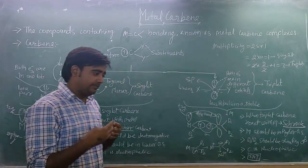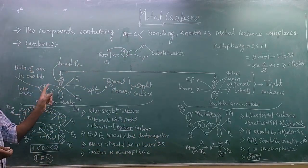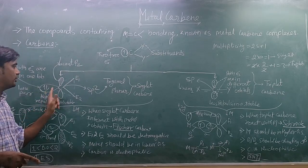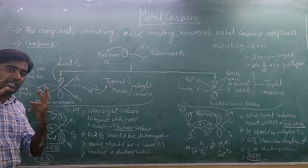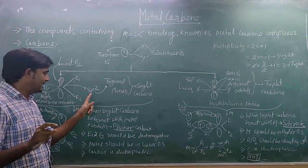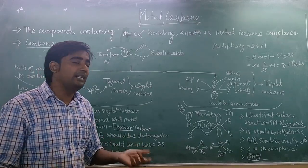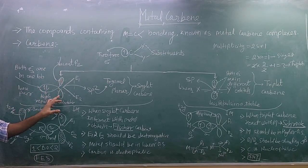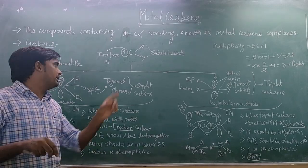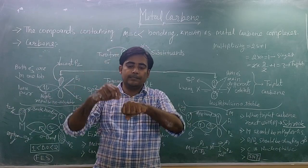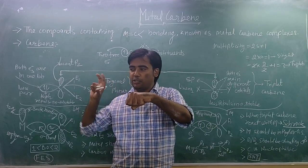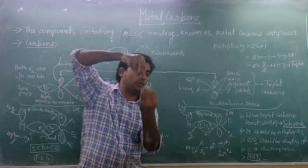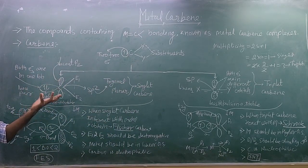Now we are going to discuss structural orientation and hybridization. In singlet carbene, the two electrons present in one orbital act as a lone pair, and a lone pair can be considered as a sigma bond. So there are three sigma bonds total, giving sp2 hybridization. Any species with sp2 hybridization is trigonal planar, so the structure of singlet carbene is trigonal planar. The pz orbital is vacant and perpendicular to the trigonal plane.